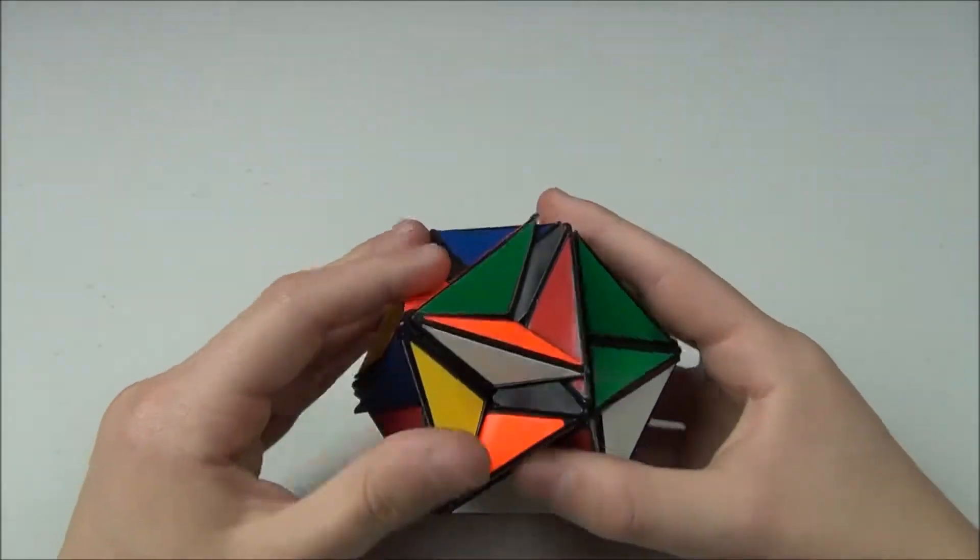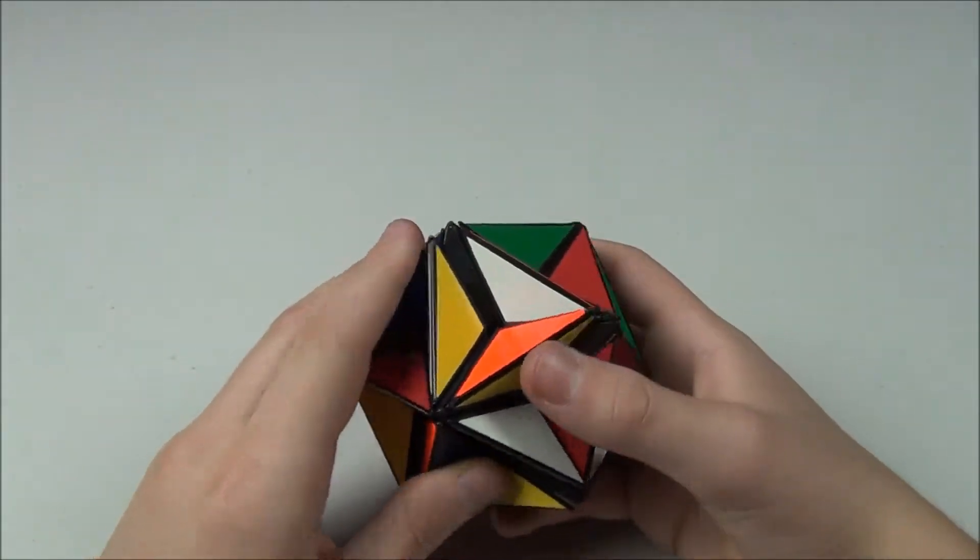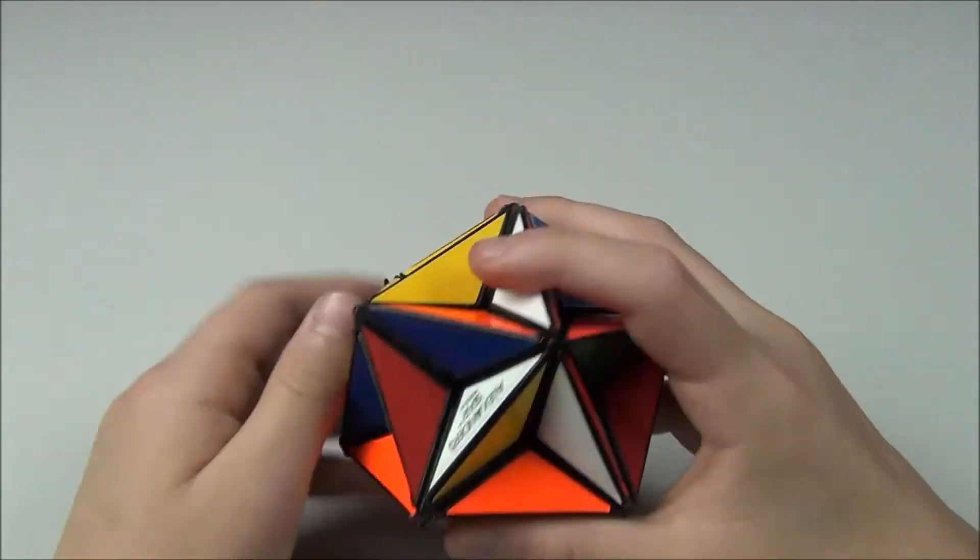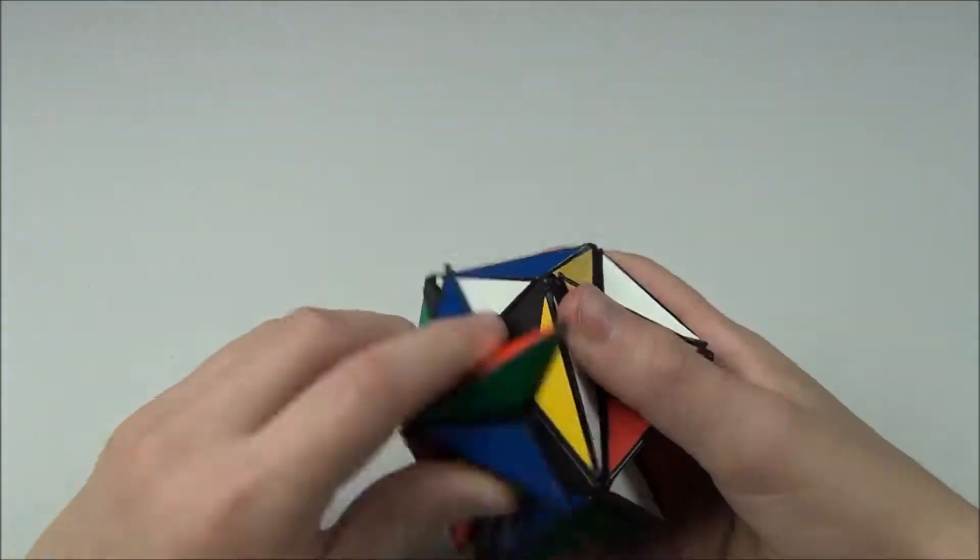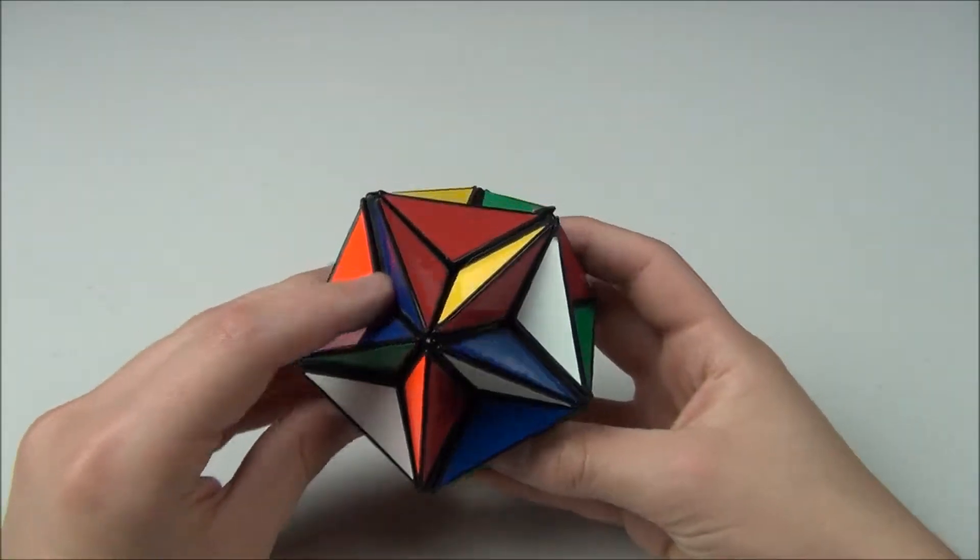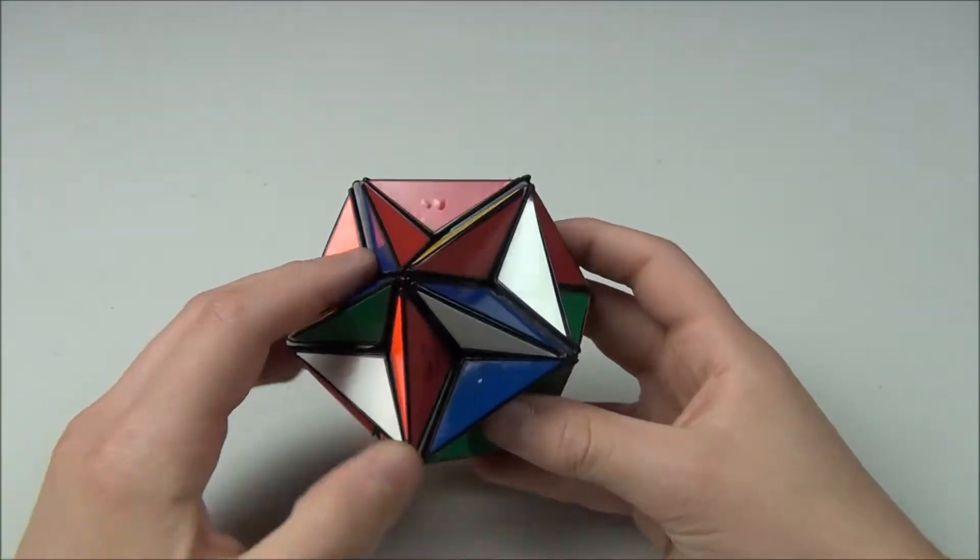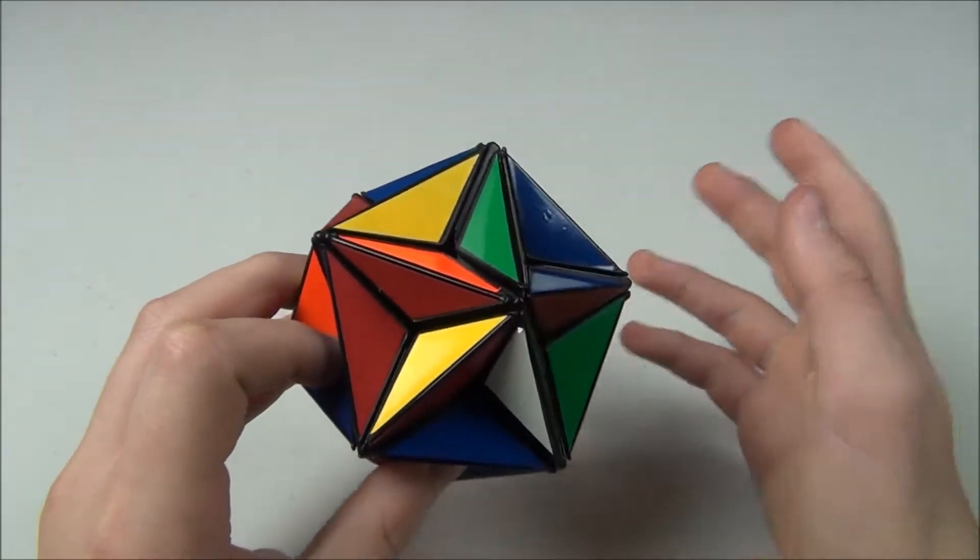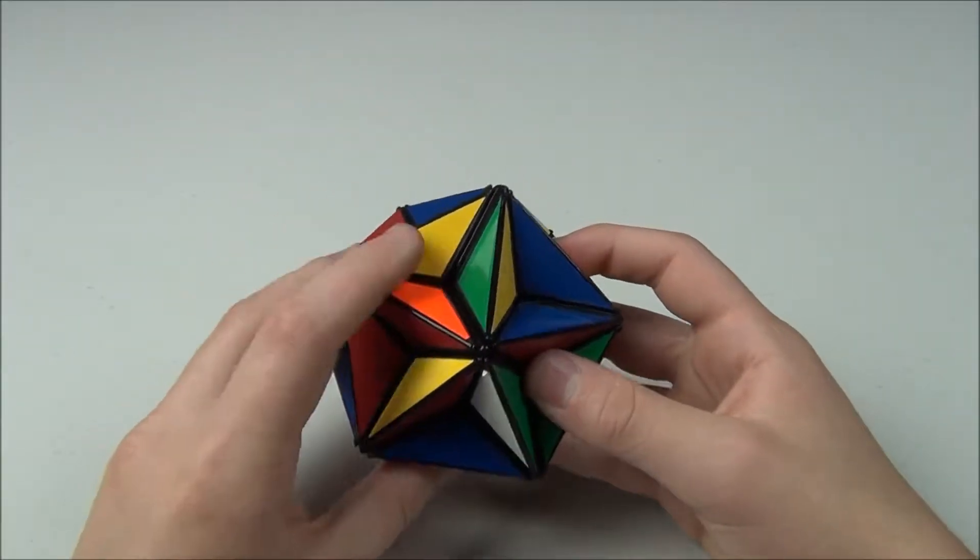Now, this was invented by American mathematician Adam Alexander in 1982, and it was patented in 1985. Now, this cube was sold by Ideal Toy Company, the same toy company that sold the 3x3 back when it first came out in the U.S. in the 1980s.